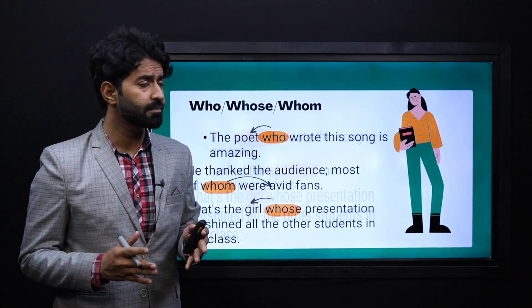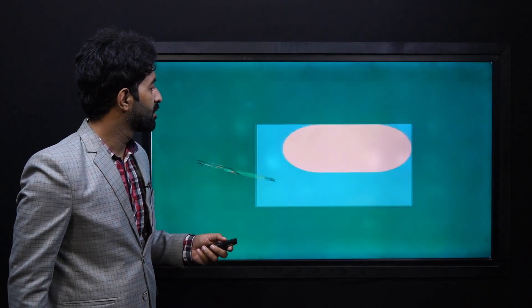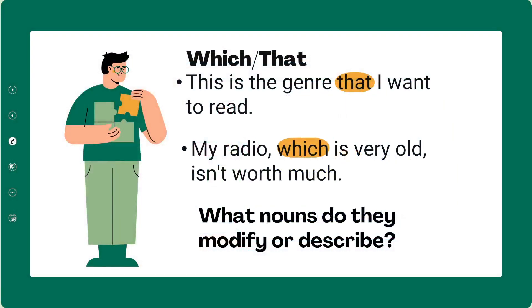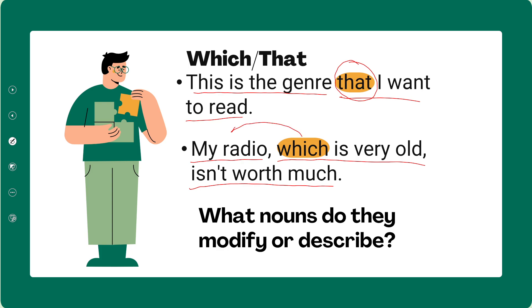Let's talk about 'which' and 'that.' Example: 'This is the genre that I want to read' — here 'that' is referring to 'the genre.' Another example: 'My radio, which is very old, isn't worth much' — this relative pronoun 'which' also refers back to the noun. So we can clearly see what nouns each relative pronoun modifies or describes.